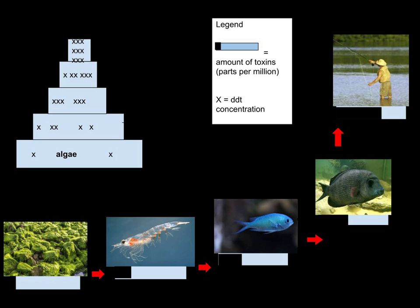This increase can occur as a result of persistence, where the substance cannot be broken down by environmental processes; food chain energetics, where the substance's concentration increases progressively as it moves up a food chain; and a low or nonexistent rate of internal degradation or excretion of the substance.